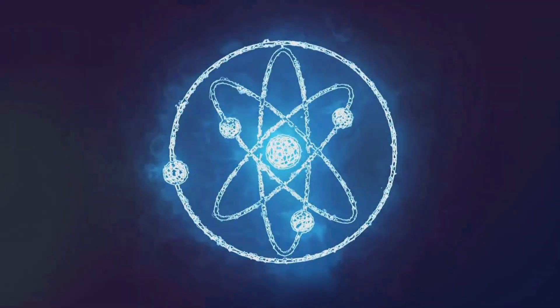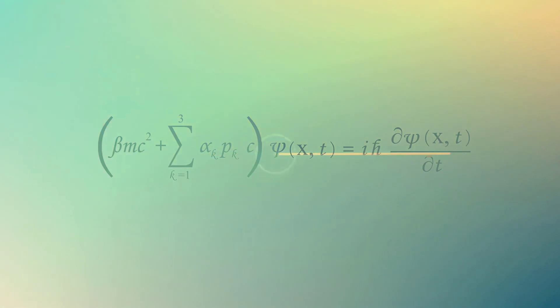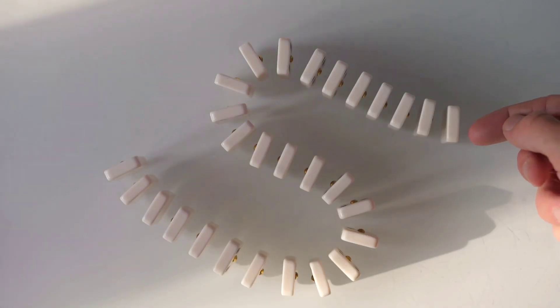Imagine a line of dominoes falling. It's tempting to see the dominoes as a continuous flow of movement, but in actuality each domino falls individually. Each domino is a quantum, an indivisible unit of action.